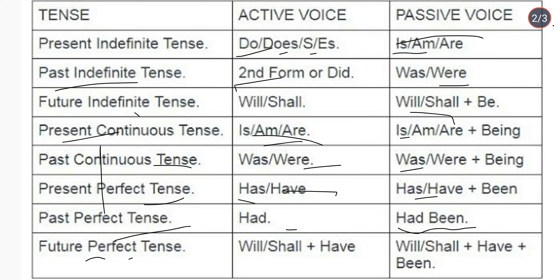Future perfect tense — active uses will/shall + have, and passive uses will/shall + have + been. These rules tell you that when you have sentences in active voice and you want to convert them to passive, you need to follow these formulas for the correct format.